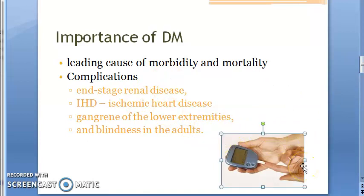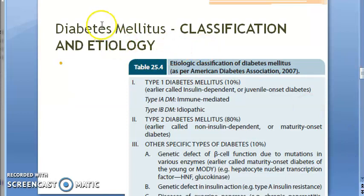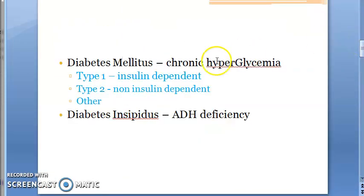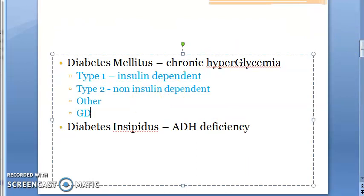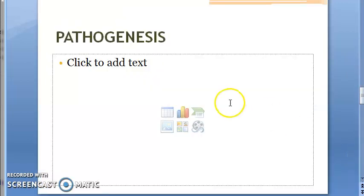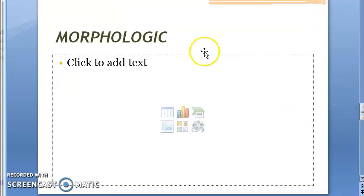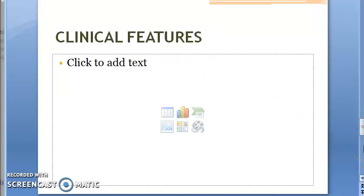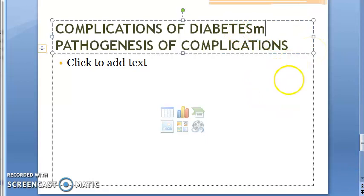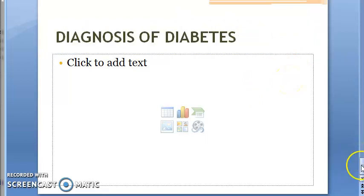7% of the Indian adult population have diabetes mellitus. We will be looking at the classification and etiology of diabetes mellitus — Type 1, Type 2, other specific types, and gestational diabetes mellitus (GDM), which occurs only during pregnancy. We'll also cover pathogenesis, morphologic features, clinical features, complications and pathogenesis of complications, and diagnosis of diabetes mellitus — all in subsequent videos.